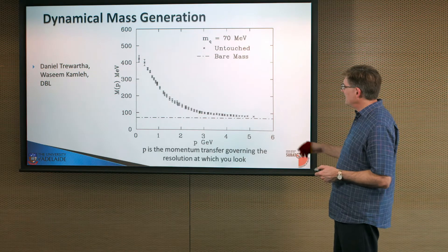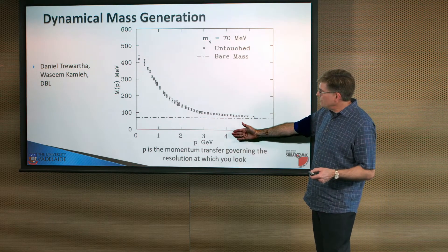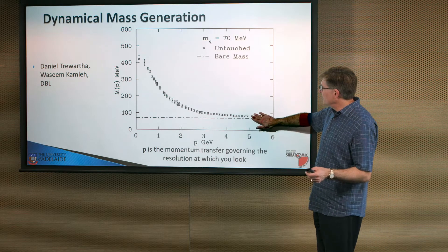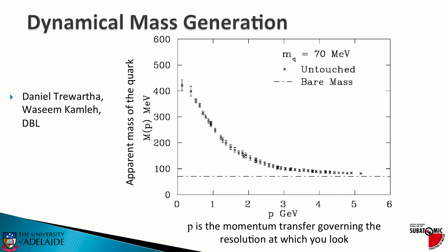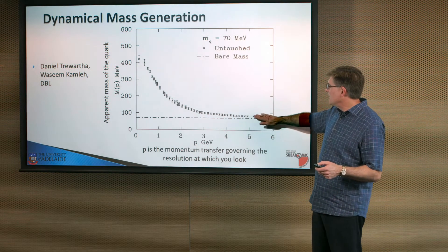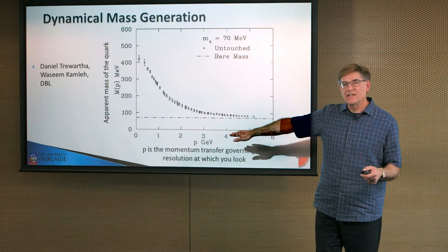Here's a plot where on the x-axis I'm using a measure of momentum transfer that governs the resolution at which you look. Large momentum corresponds to short distances, so we've got short distance on the right and large distances on the left. On the y-axis we're looking at the apparent mass of a quark as it sits in the proton. At large momenta and short distances, not much is happening — you see the mass put into the simulation as the dot-dash curve, with a little bit of mass generation, but nothing to get excited about.